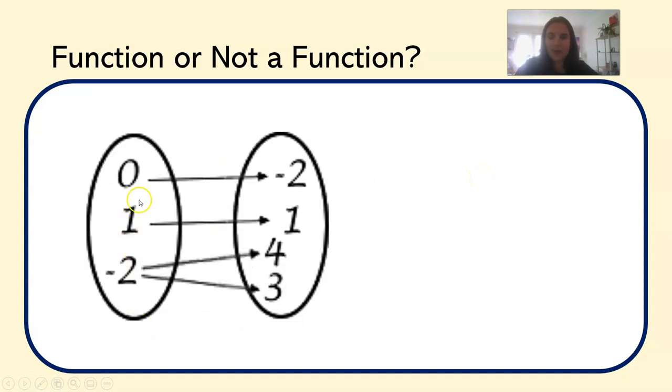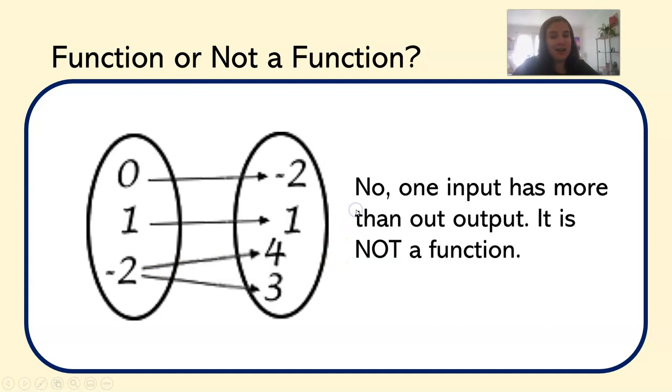What about this one? Zero goes to negative two. One goes to one. Negative two goes to four and three. So this is not a function. One input has more than one output. It is not a function.